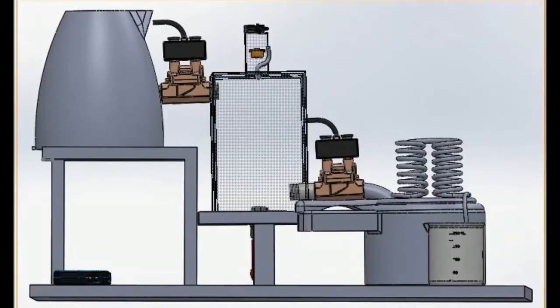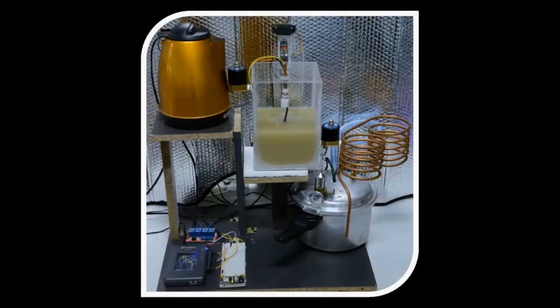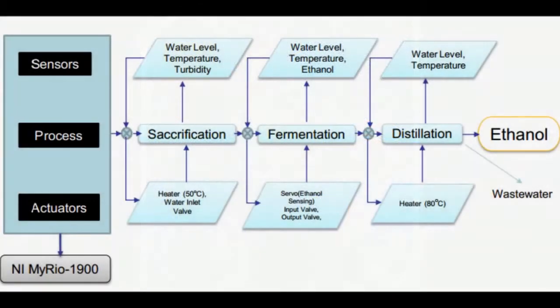Thus, we designed a system to convert the excessive paddy straw into bioethanol. It consists of three system processes: Saccharification, Fermentation, and Distillation with sensor-actuator interfacing.